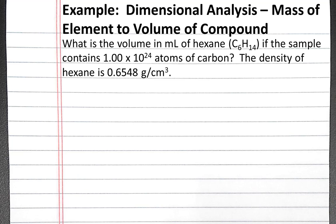The question is, what is the volume in milliliters of hexane (C6H14) if the sample contains 1.00 × 10²⁴ atoms of carbon? The density of hexane is 0.6548 grams per centimeter cubed.